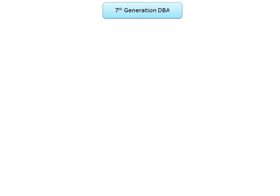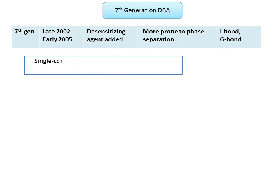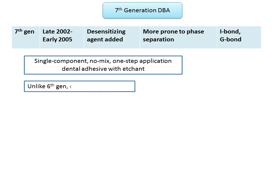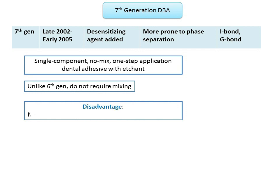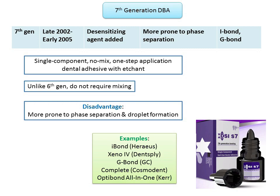The seventh generation dental bonding agents were introduced between the late 2000s and early 2005. The system is similar to the sixth generation but a desensitizing agent was added to overcome hypersensitivity. It is a single-component, no-mix, one-step application dentinal adhesive with an etchant, adhesive, desensitizer, and photo-initiator. The major drawback is that the complex nature of mixed solutions makes them more prone to phase separation and formation of droplets within the adhesive layer, and there is a lack of polymerization of the thin film. Examples include i-Bond, Xeno-4 by Dentsply, G-Bond, Complete by Cosmodent, and OptiBond.